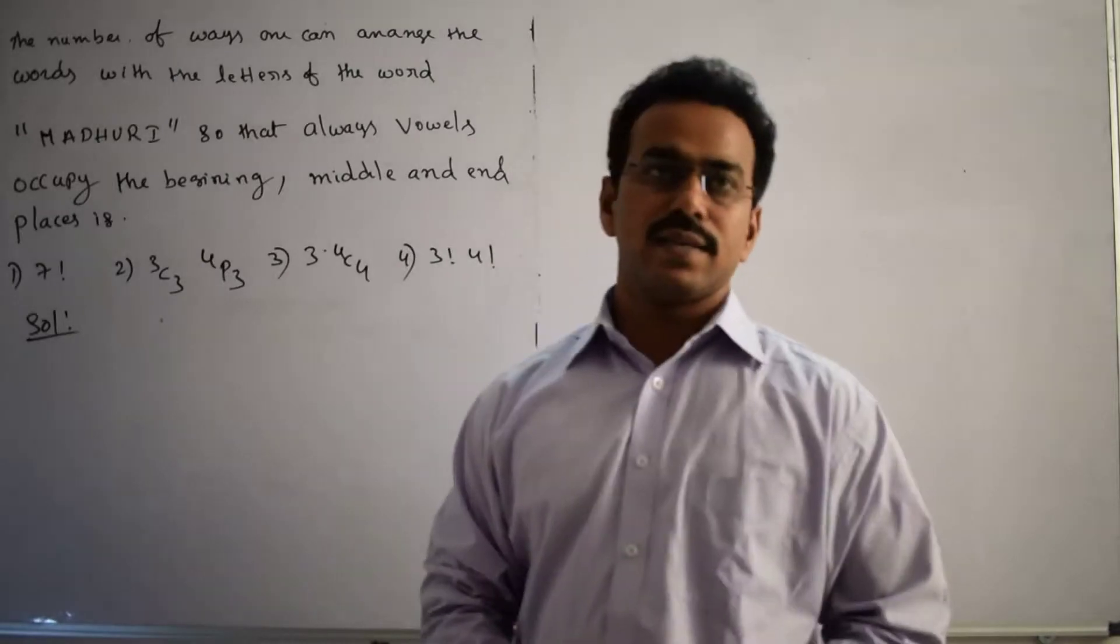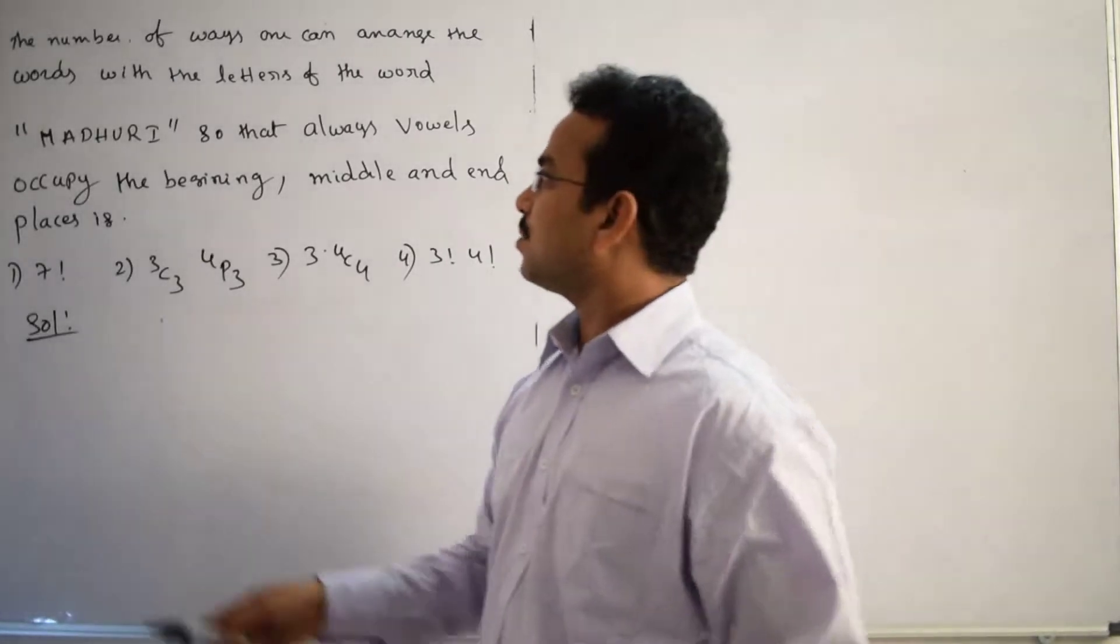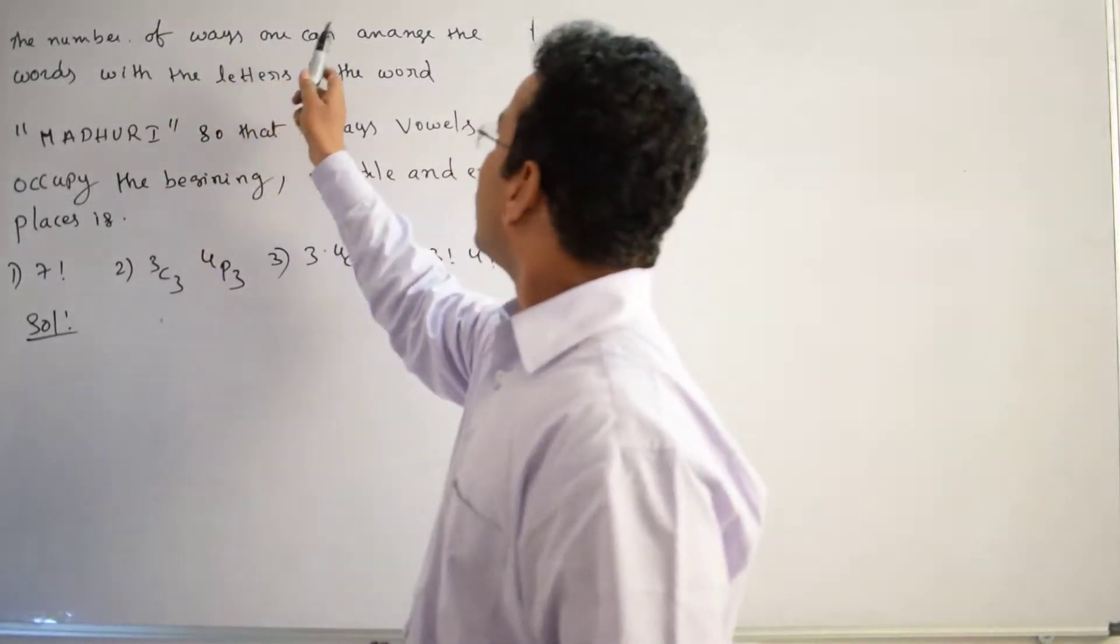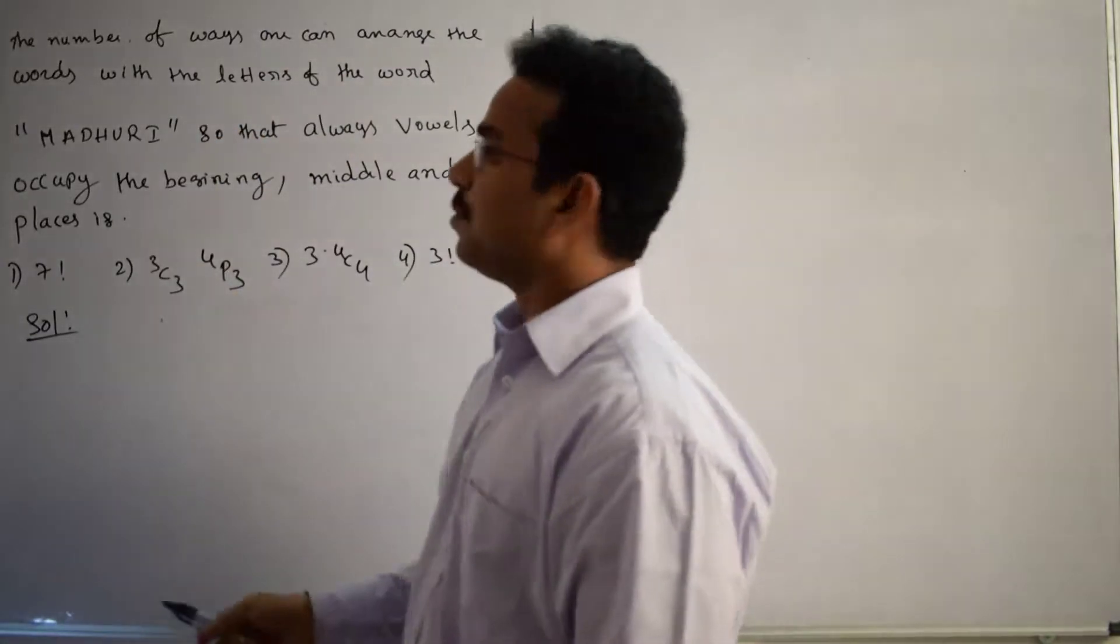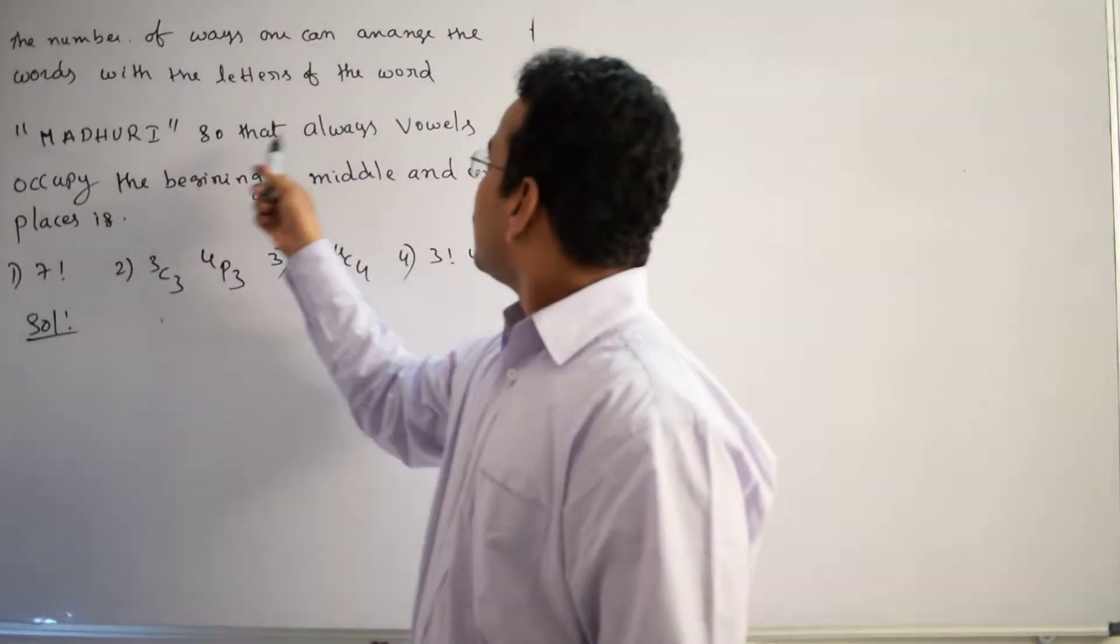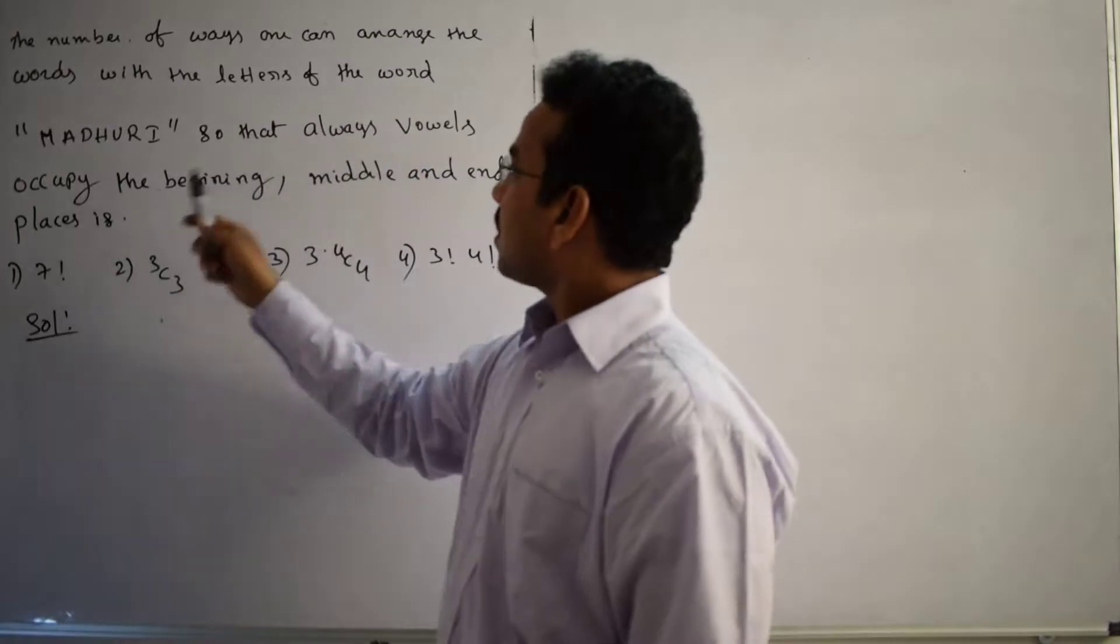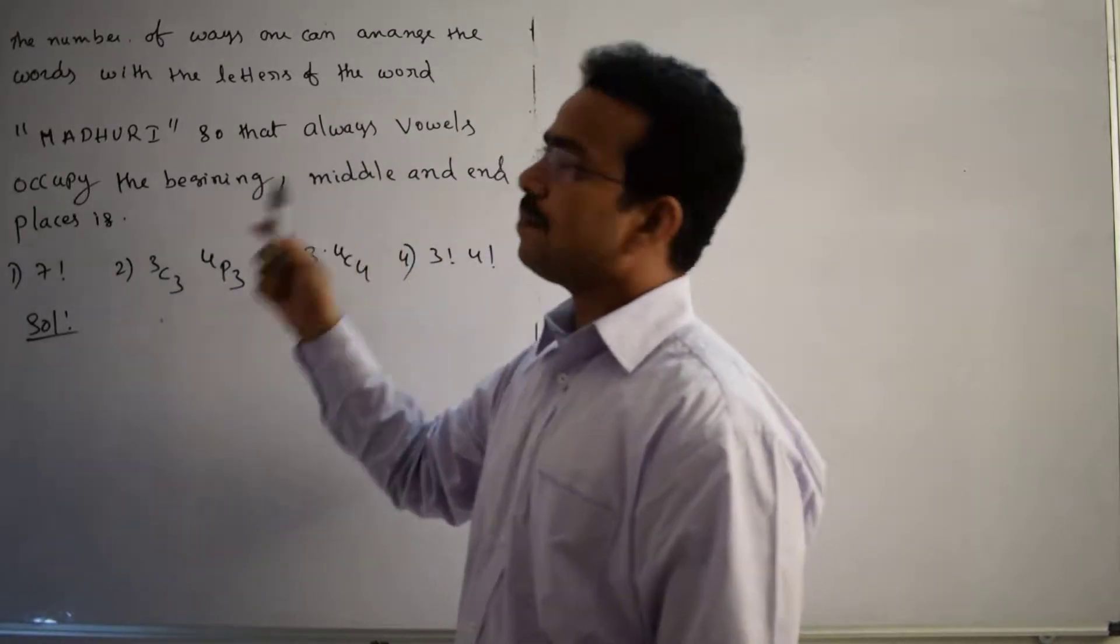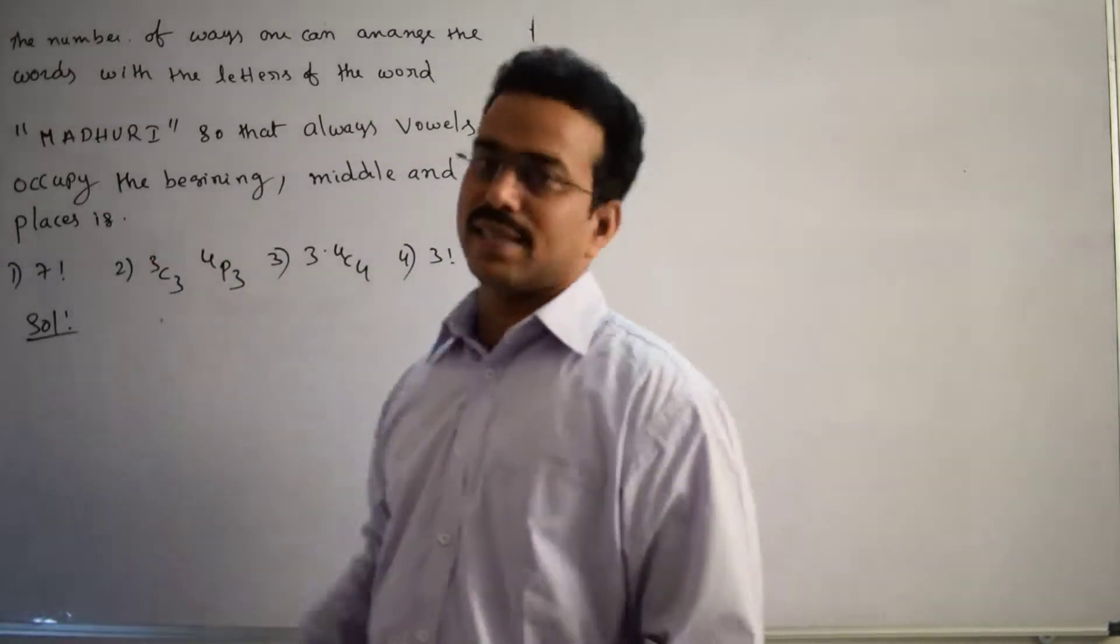Hi, let's discuss the solution to this problem. What is the question? The number of ways one can arrange the letters of the word MADHURI so that vowels always occupy the beginning, middle, and end places.